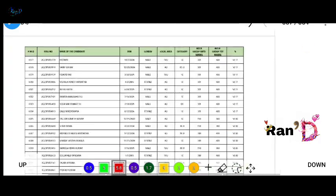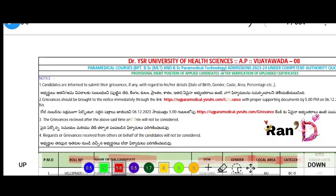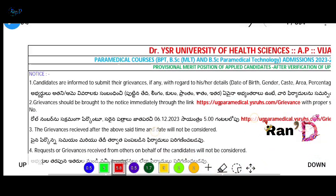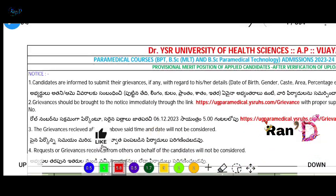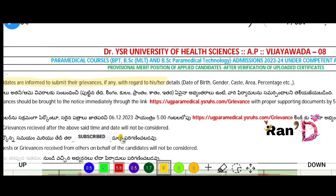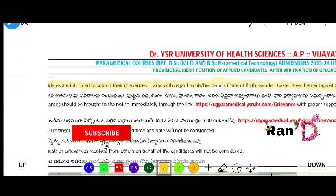Compare your role number and name with the details shown. If anyone has a mistake in their details, they are informed to submit their grievances if any — with regard to details like date of birth, gender, caste, area, or percentage.